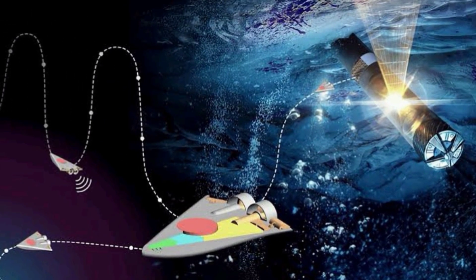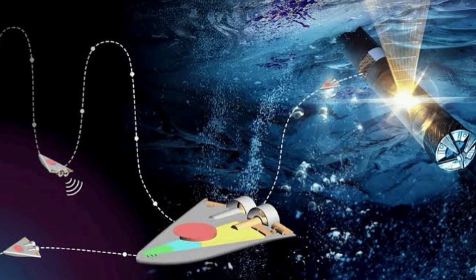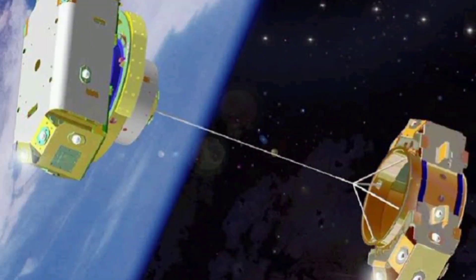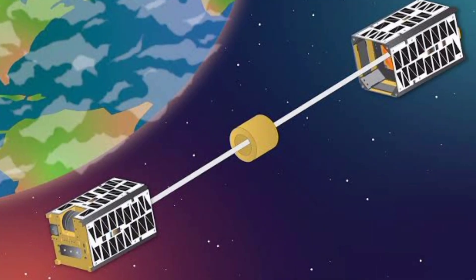These microswimmers will detach from Sesame, the mothership, and move on their own to explore the huge ocean, but would be connected by a tether. And using a tether is tricky, because a space tether is a thin long cable that keeps spacecraft together while they orbit a central body.